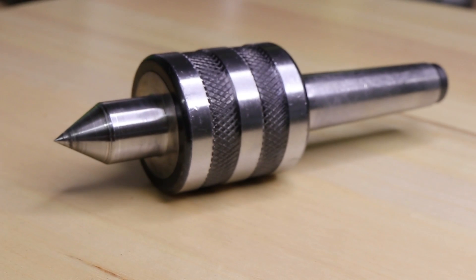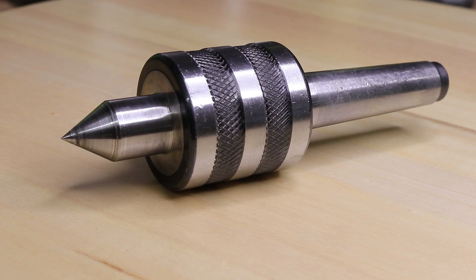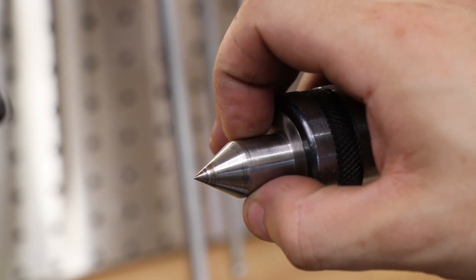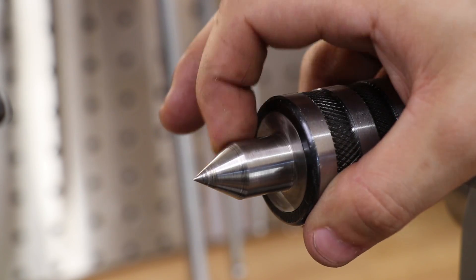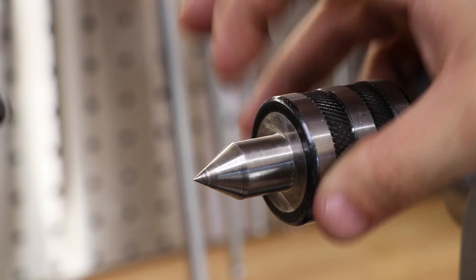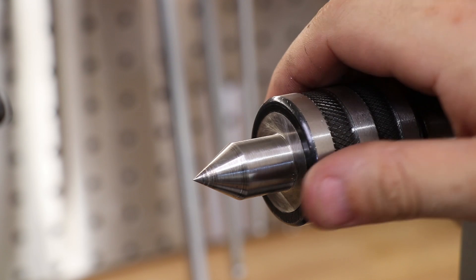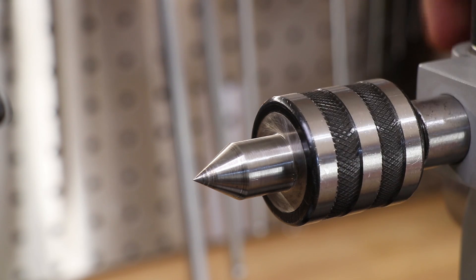It's also recommended that you buy a live center for the tail stock. They start at around $40 each, and that's what you'd expect to pay for what is essentially a hardened cone in a ball bearing. I've had this one since I bought the lathe on day one, and after more than two and a half years of work, there isn't any play or slop in the bearings that I can feel. It's certainly a tool to buy on the first day, and I can see myself using this one for many years to come.